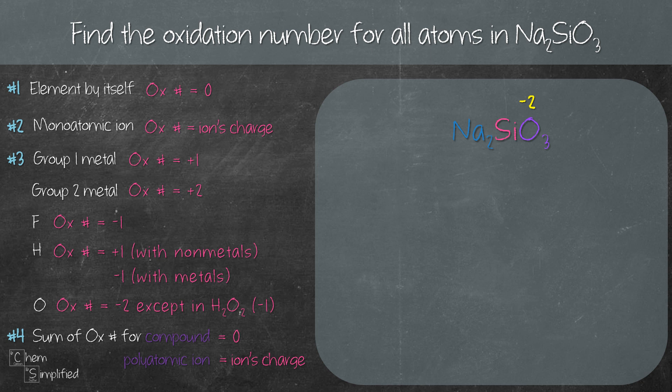So we're gonna break it down and that's gonna give us Na plus because Na comes from group 1 metal and group 1 metals form a plus 1 charge and knowing that, that's gonna give us the charge for our silicate ion which is SiO₃ 2-.